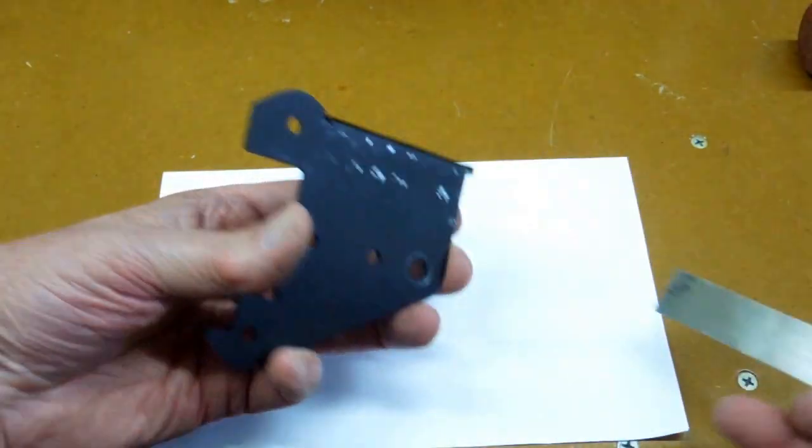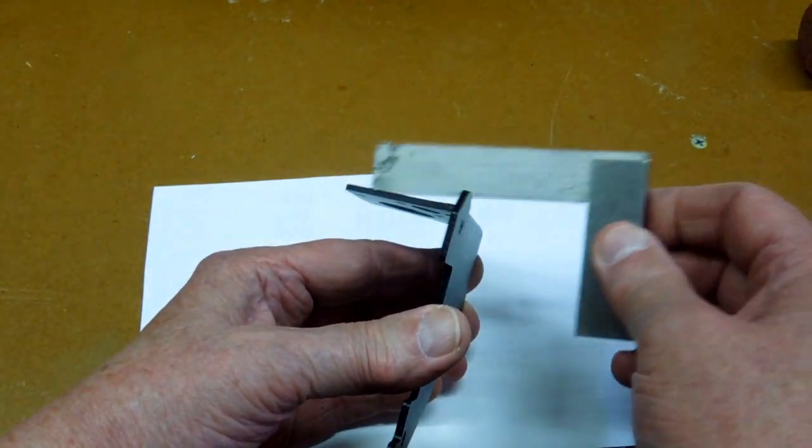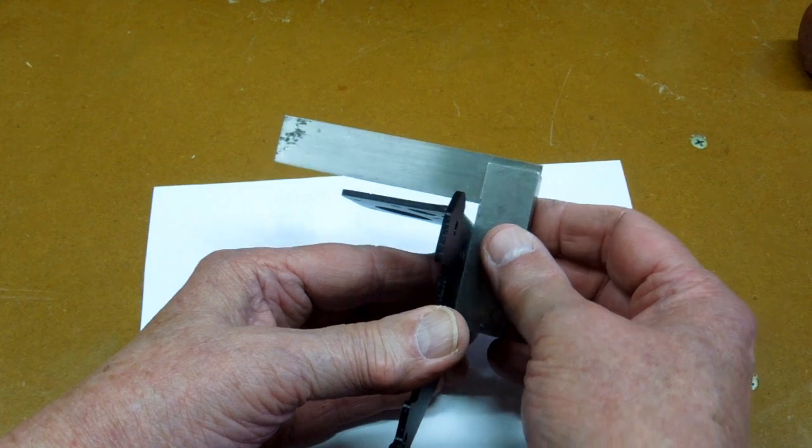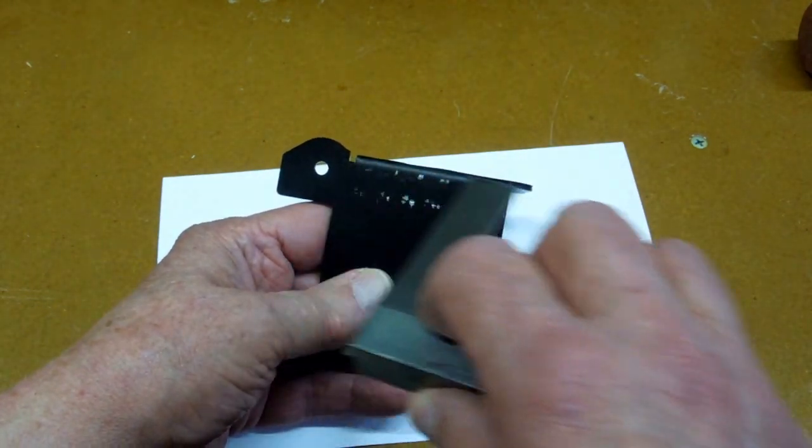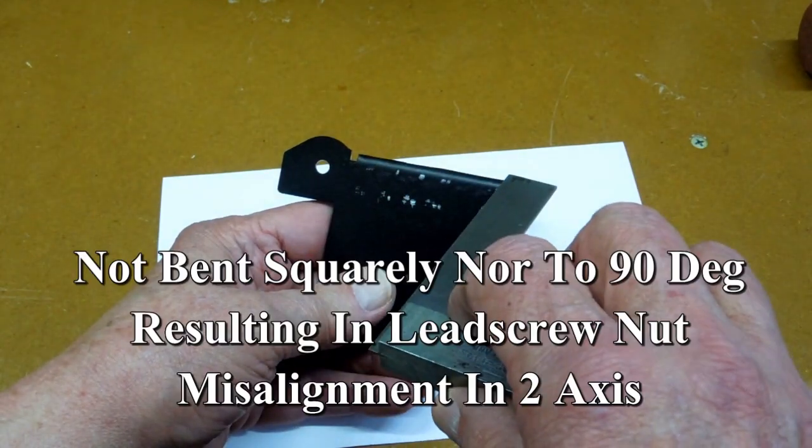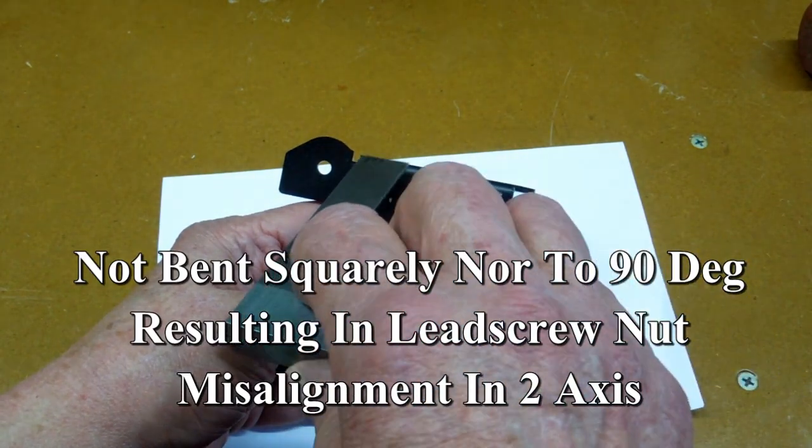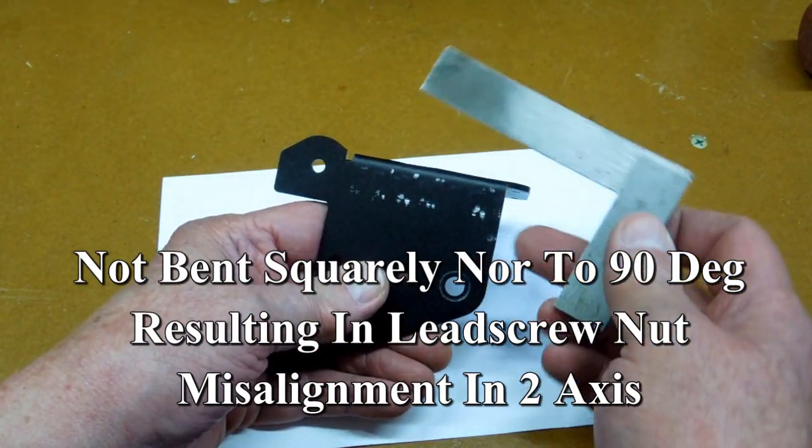Looking at this bracket a little closer, this was not bent to 90 degrees in this direction and it was bent a bit off. It was bent more here than it was here, and it wasn't square with this.